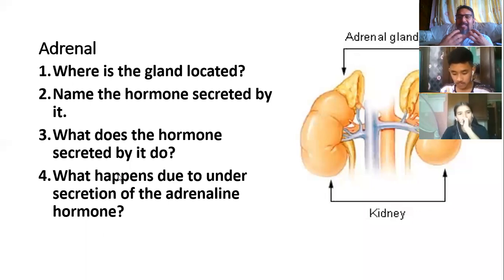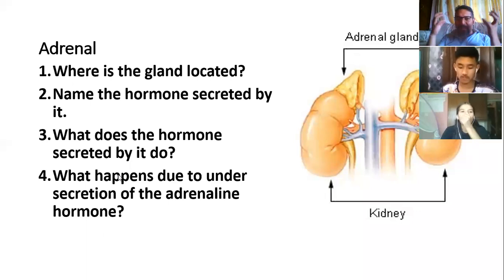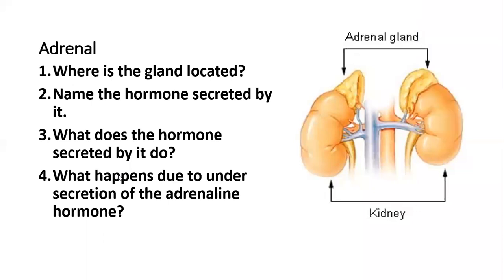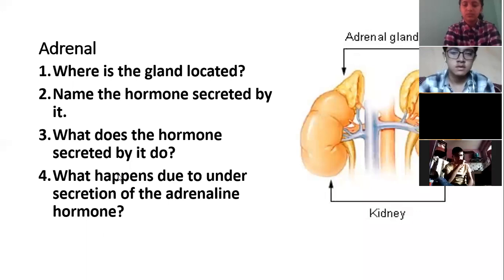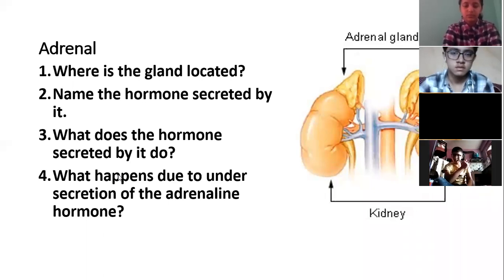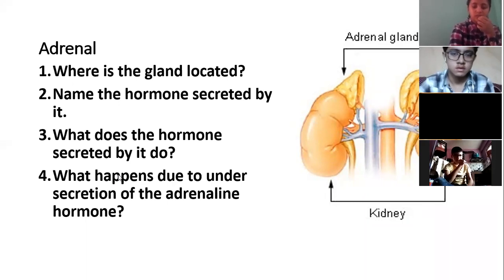In emergency conditions such as shock, fear, or exercise, the body requires an energy supply. The adrenal gland controls and regulates action in these situations, which is why it is called the Emergency Gland. It is also called the Suprarenal Gland because it lies above the kidney. It controls the action of the heart and produces and supplies energy to the body during emergent conditions.